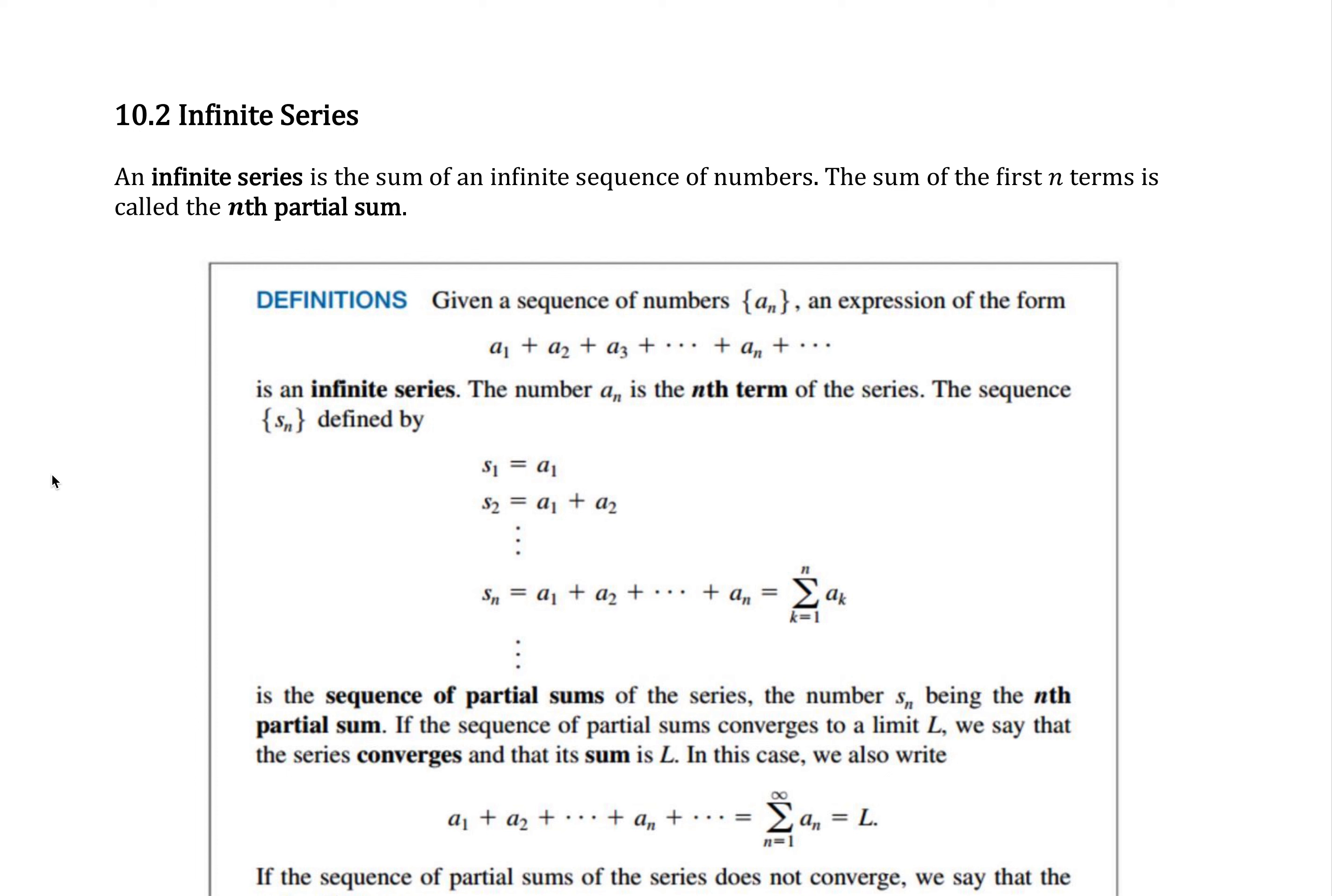We say that the sum of the first n terms is called the nth partial sum. If we have a sequence of numbers, to get the corresponding series, you just add up the terms of the sequence.